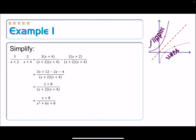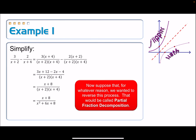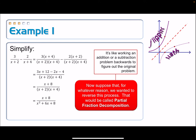Suppose that for whatever reason, this is what we're starting with, and we wanted to work that entire process backwards. Working this process backwards is called partial fraction decomposition, because we're going to take this rational expression and decompose it into two partial fractions that make it up. It's like working an addition or subtraction problem backwards so that we can figure out what the original problem was — where did this thing come from? What addition or subtraction problem gave rise to it?